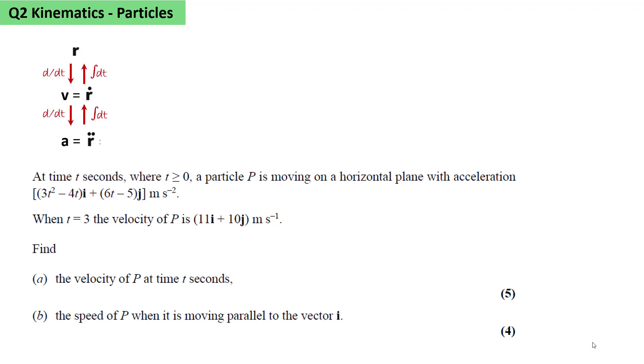This picture summarizes what we need to know. If we take the displacement vector r and differentiate it with respect to t, we get the velocity vector. If we differentiate this, we'll get the acceleration vector. To go in the reverse direction, we need to integrate with respect to t. On the right-hand side of the diagram, we see the dot notation. r dot means dr/dt. r double dot is the derivative of r dot with respect to t.